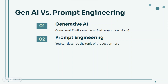Popular examples include tools like GPT-4 for text generation and DALL-E for image creation. On the other hand, prompt engineering is the art and science of crafting the right prompts to get the desired output from these AI models.